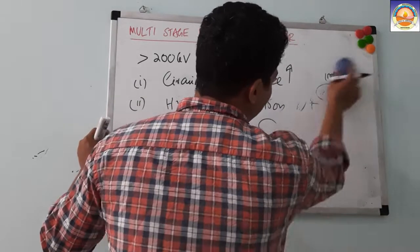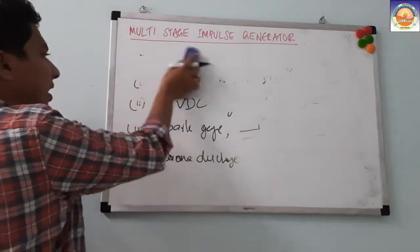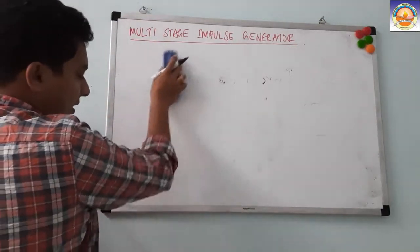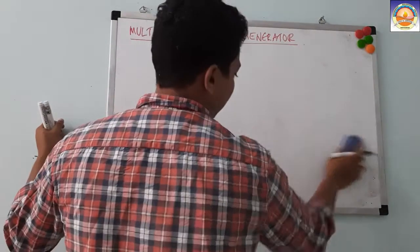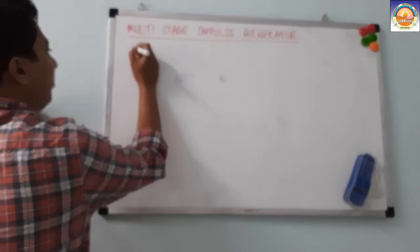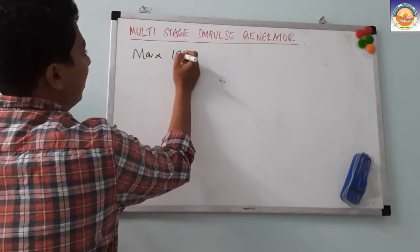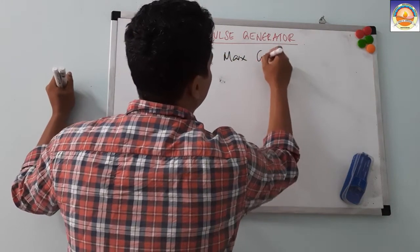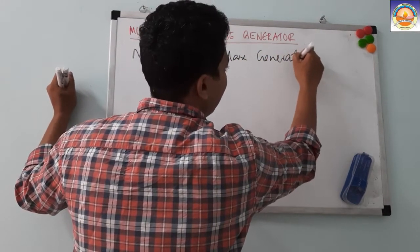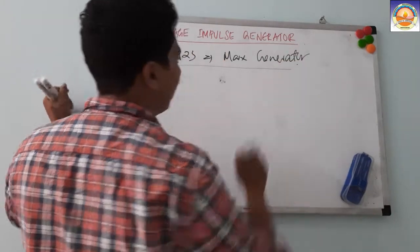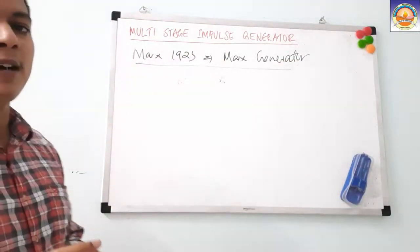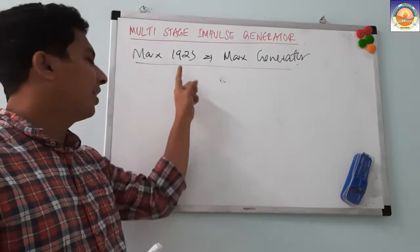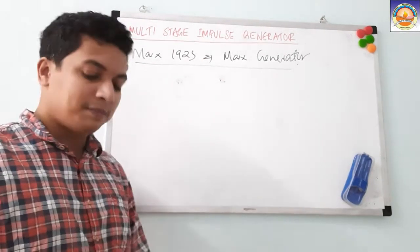With that thought, people started working, and in 1923 an engineer called Marx came up with an idea. That generator is called the Marx generator.